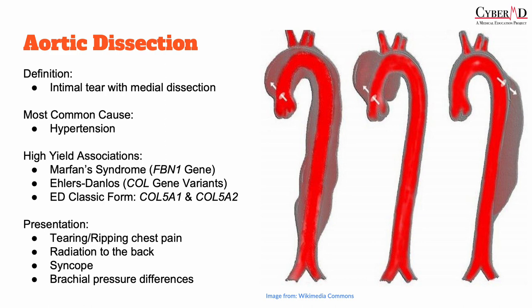Clinically, aortic dissection classically presents with a sharp, tearing chest pain that radiates to the back. Typically, patients endorse excruciating precordial or interscapular pain. They often describe the pain as tearing or ripping with abrupt onset. The pain frequently migrates from the chest and can radiate to the back. They may pass out — syncope — due to pain or sudden changes in blood pressure. A difference in blood pressure between the arms can also clue you in to a diagnosis of dissection, as the dissection may interfere with vascular supply to one arm but not the other.